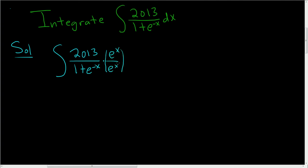Well, we have an e to the x in the numerator now, right? So let's clean it up, and you'll see. So we get 2013, e to the x. In the denominator, we have e to the x times 1, so that's just e to the x. And then e to the x times e to the negative x is just 1.